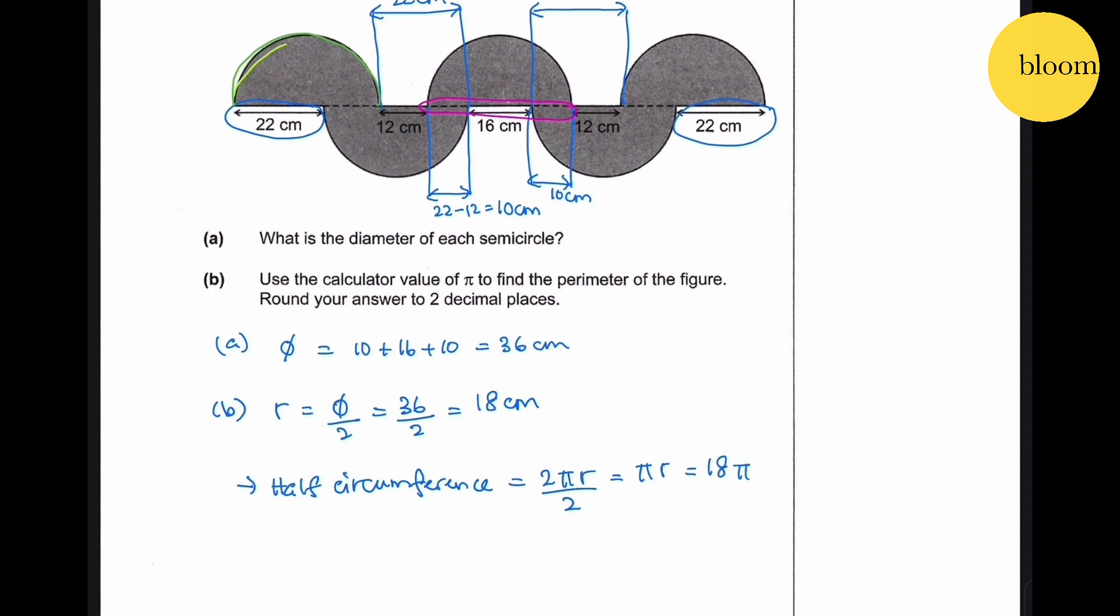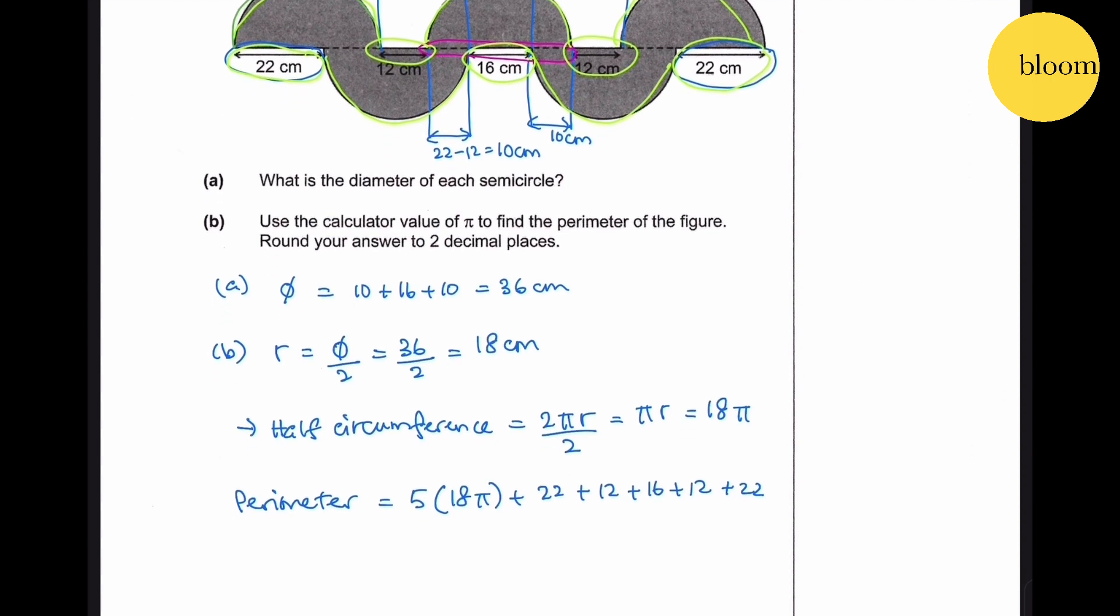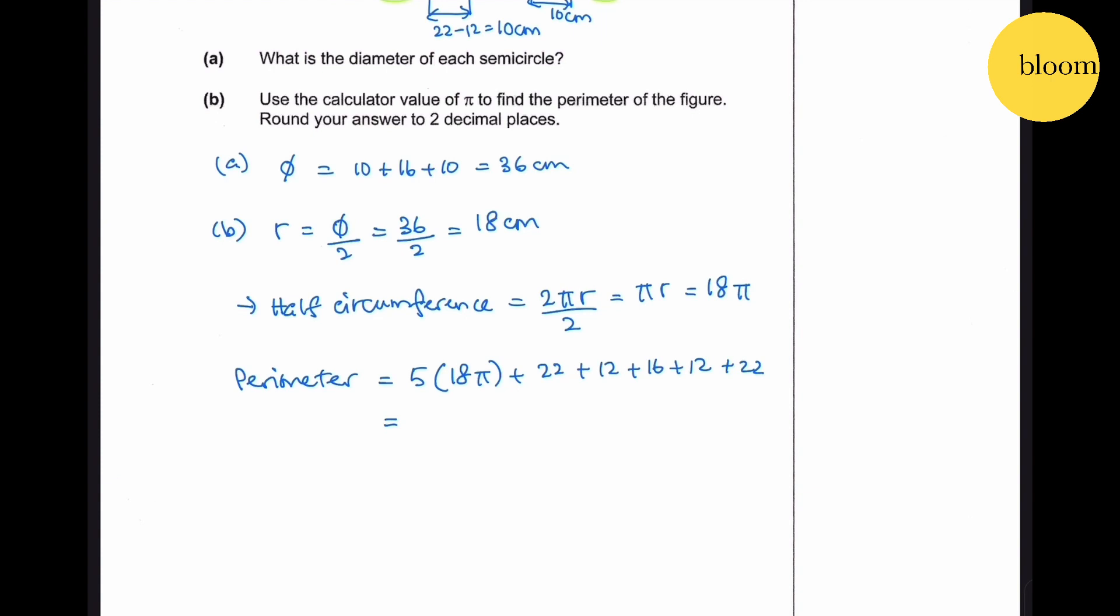We have 1, 2, 3, 4, 5 semicircles and add 22, 12, 16, 12, and 22. Perimeter is 5 times 18π plus 22 plus 12 plus 16 plus 12 plus 22, which gives us 90π plus 84, which equals 366.74 to two decimal places.